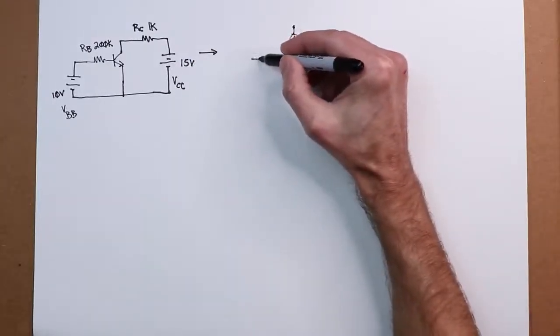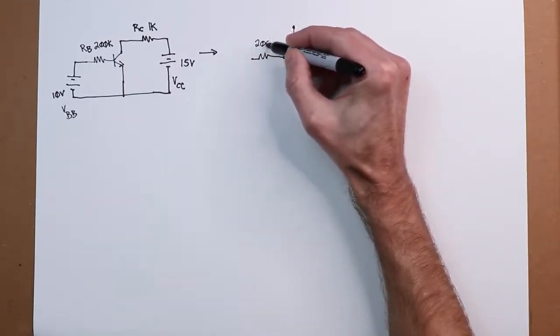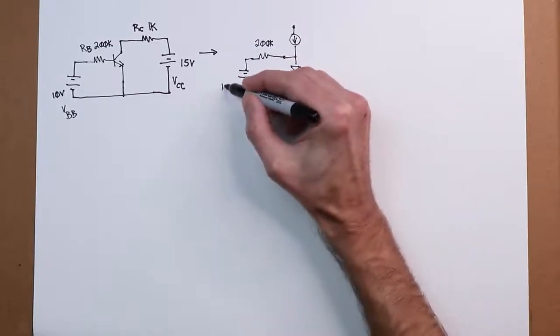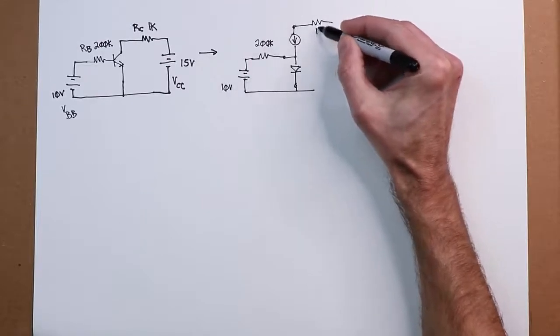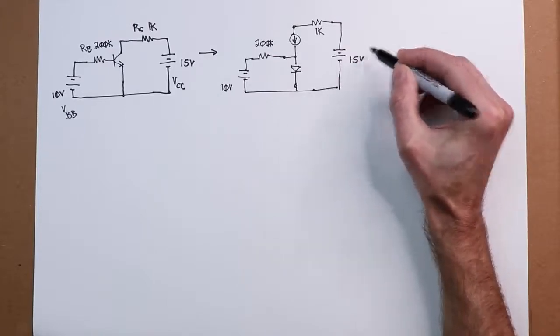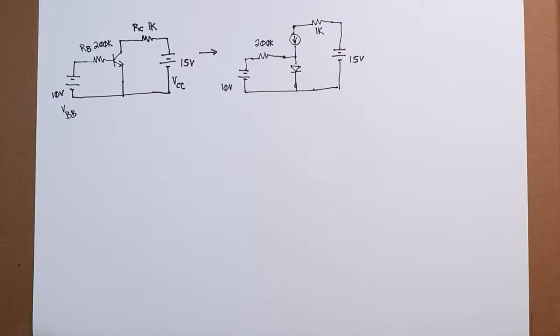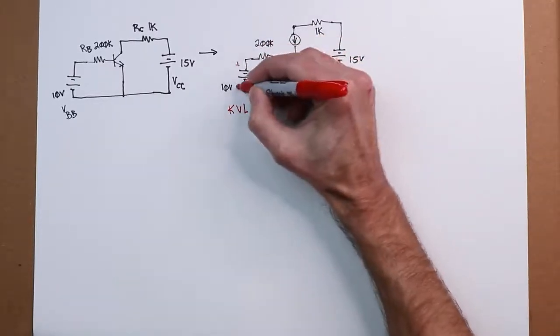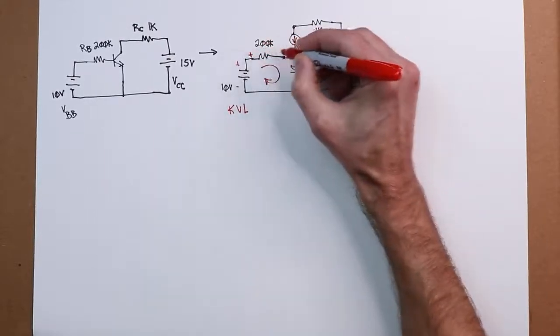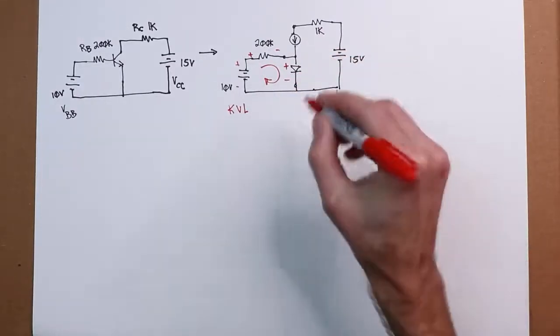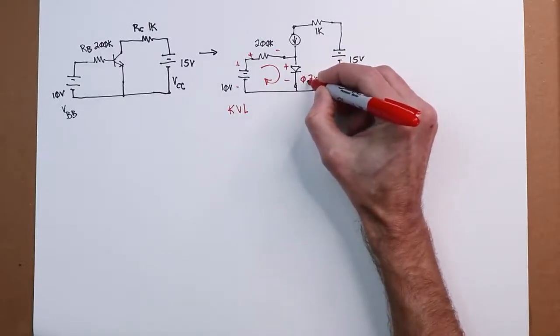So here's our model. I'm just going to add everything back in here. There's our 200k, our 10 volt power supply, and then coming off here we've got our 1k and the 15 volt power supply. Now, how do we go from here? Well, we basically have two loops, so we can use Kirchhoff's voltage law.